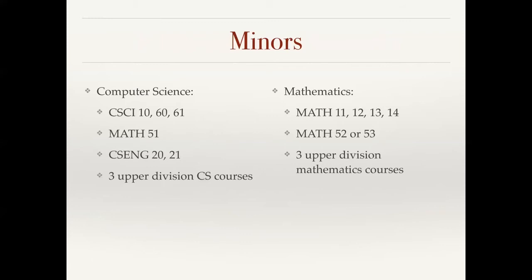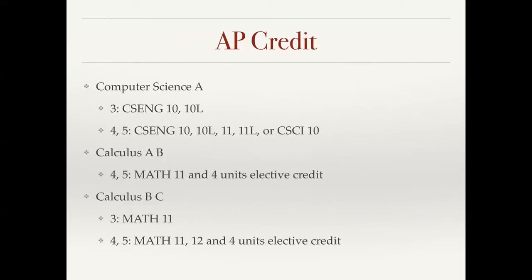We have minors in both computer science and mathematics. Students who are minoring in our subjects take a subset of the classes required for the majors. Computer science minors take the first-year sequence CS10, 60, and 61, discrete mathematics, the beginning engineering classes 20 and 21, and then three upper division computer science courses. Math minors take the calculus sequence, Math 11 through 14, and either abstract algebra or linear algebra, and then three upper division mathematics courses.